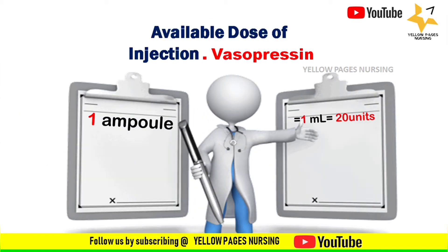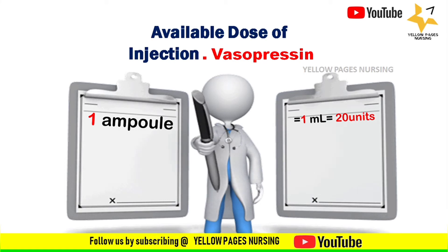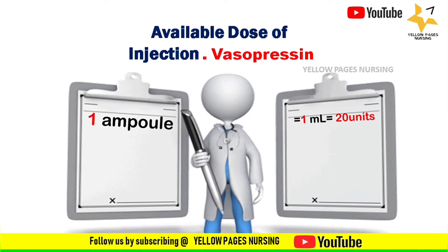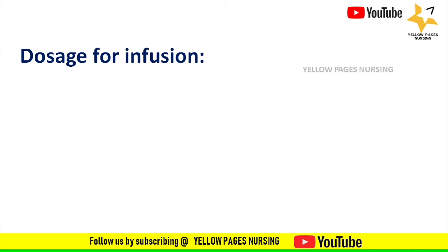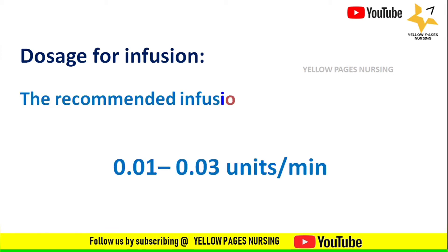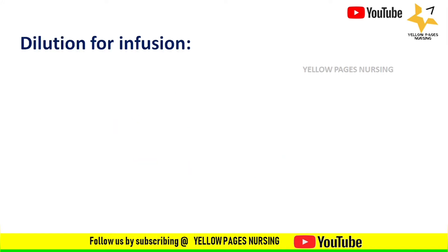One ampoule contains 1 ml which equals 20 units of strength. Looking into the dosage for infusion, the recommended infusion rate for vasopressin in adults ranges between 0.01 to 0.03 units per minute.